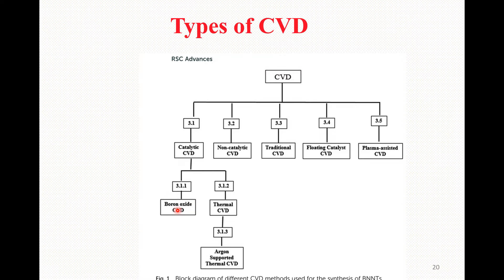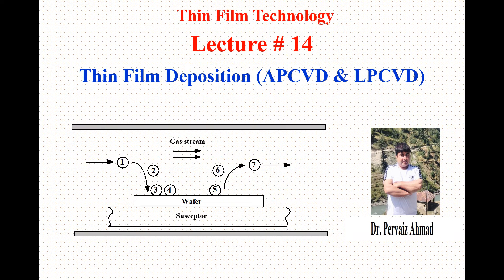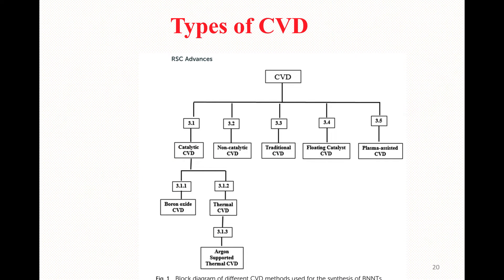Those two catalytic CVD types are Boron Oxide CVD, called BOCVD, and Thermal CVD. One special type we developed ourselves uses argon gas instead of vacuum as an inert atmosphere, which we named Argon Supported Thermal Chemical Vapor Deposition. For details, the article is available on the RSC Advances website titled 'CVD Synthesis of Boron Nitride Nanotubes: A Comprehensive Review.' That's all for this lecture — see you next lecture for further details about thin film growth.